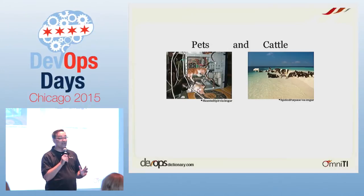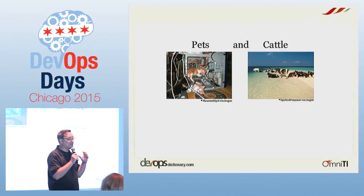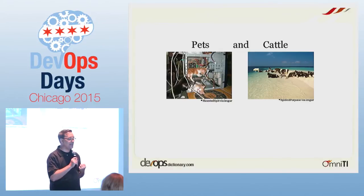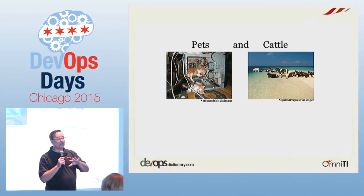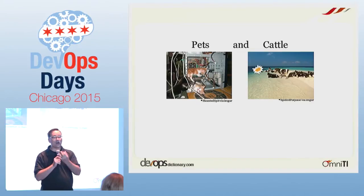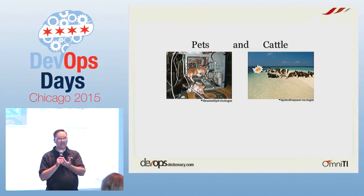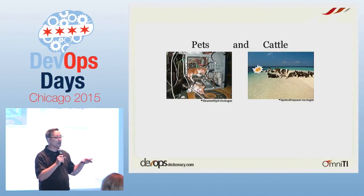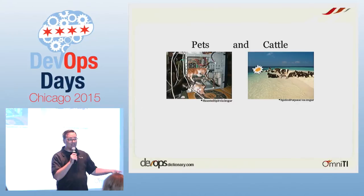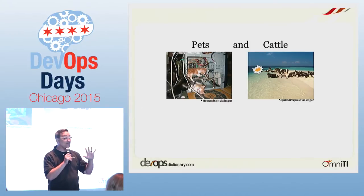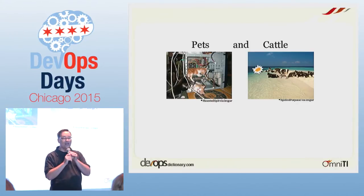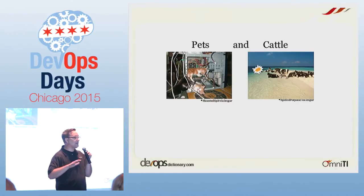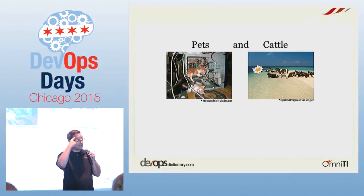Pets and cattle — you may have heard this in reference to servers. A server that is a pet is one that you lovingly maintain. If there's a problem on it, you go in and fix it. You try to have it be long-lived, with big uptime, that sort of thing. Cattle? No. Easy to create, easy to destroy. You have a lot of automation around it. If you have hundreds and hundreds of these things, it's not practical to treat them as pets — treat them as cattle. It's a whole mindset thing.